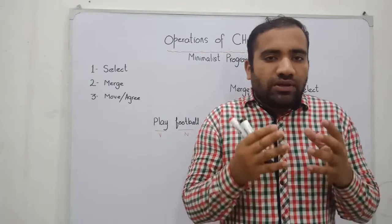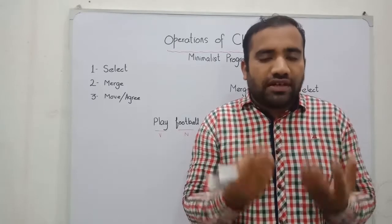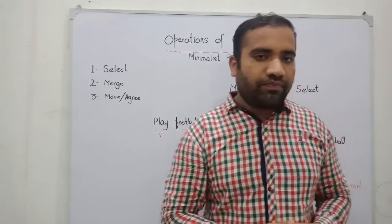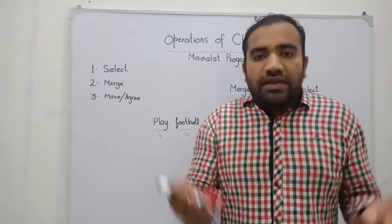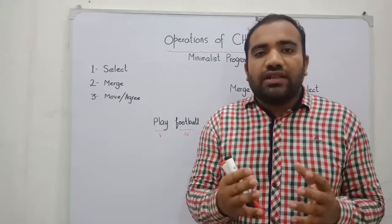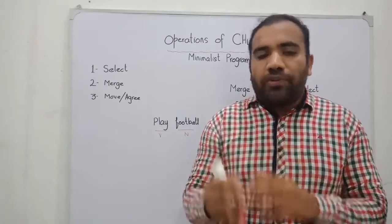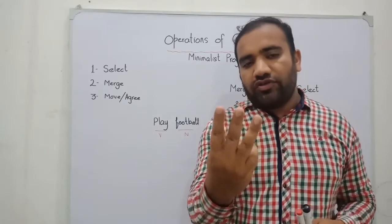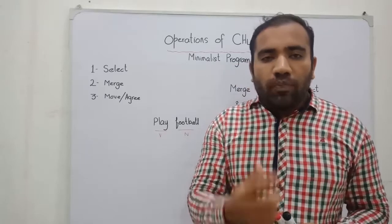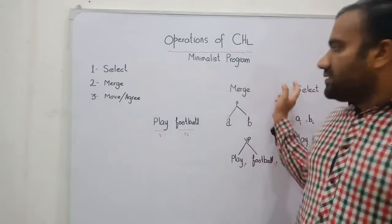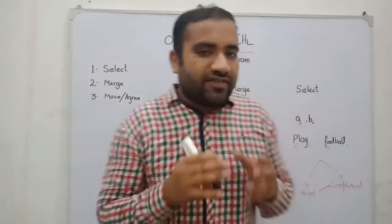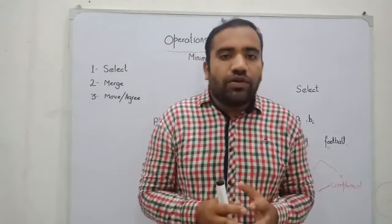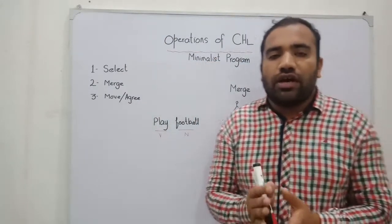So when we say CHL is deriving, producing, and generating sentences, it has some operations for making a sentence. CHL has to follow some operations. There are three basic operations: the first operation is called Operation Select, the second is called Operation Merge, and in this video I am going to deal with Operation Merge.